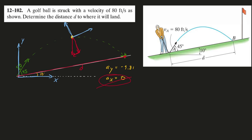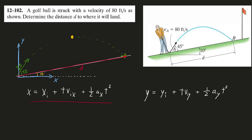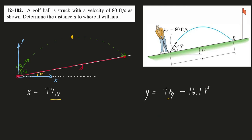For this problem we'll keep the standard x to the right, y going up, and use these x and y kinematic equations. At time zero, our golf ball is at x-coordinate zero and the acceleration in x is zero. In y, at time zero, the golf ball starts at y equals zero, and the acceleration in y is -32.2 feet per second squared. Multiplying by one-half gives -16.1.